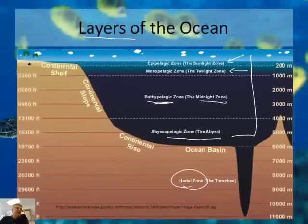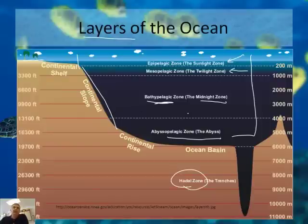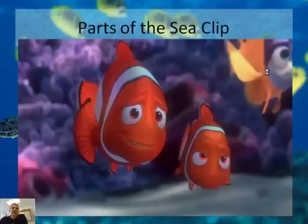This is where the continental shelf is — we talked about it with plate tectonics. There's this continent, and then the actual continent drops off. There's a huge drop-off, maybe 20 to 30 miles off the coast, into the deep parts of the ocean. Sometimes you're going to have a mid-ocean ridge, like you might have right here or something like that. But it's a very deep place.